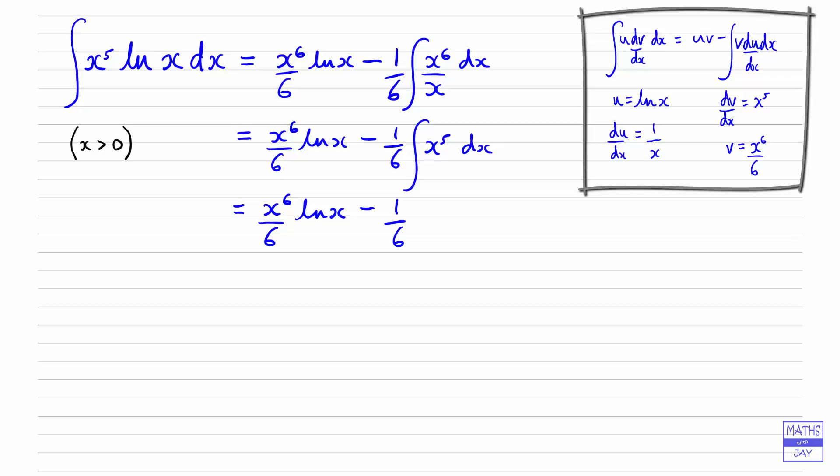Nothing changes here. So we've got a 6, and then integrating x to the 5th is x to the 6 over 6, and we've integrated, so now we need constant of integration.